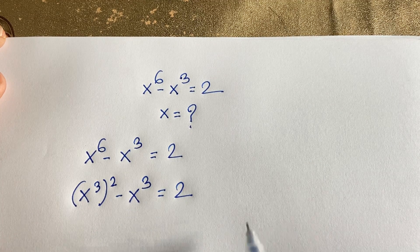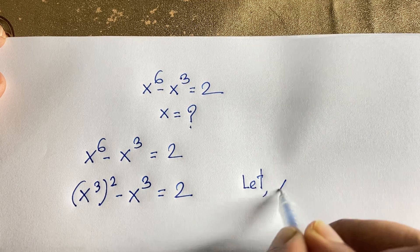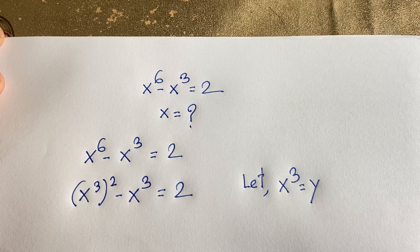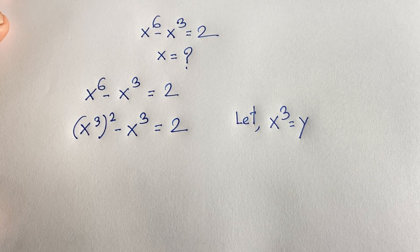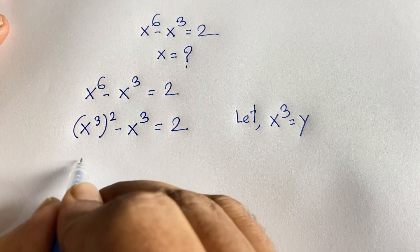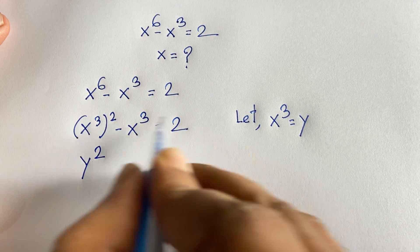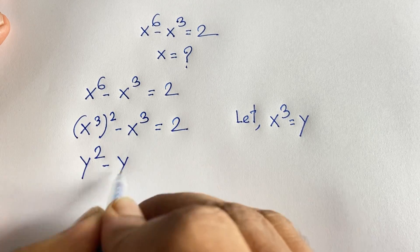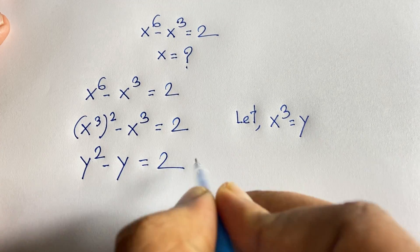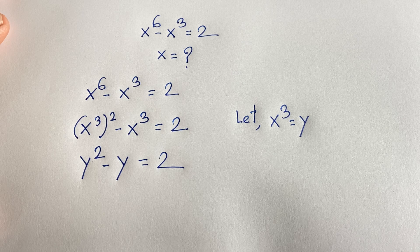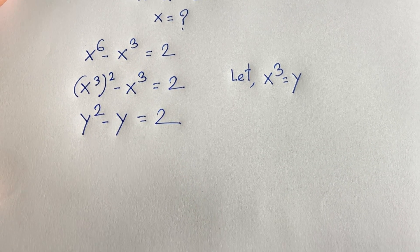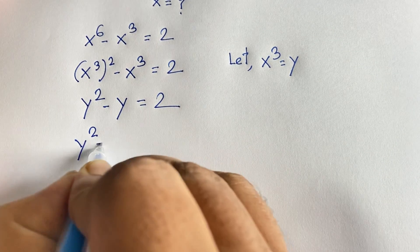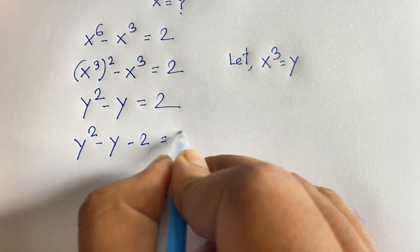Now we let x to the power 3 equal y. So this becomes y to the power 2, because x to the power 3 equals y, minus y — since x to the power 3 is y — is equal to 2. So we are finding a quadratic equation: y squared minus y minus 2 is equal to 0.